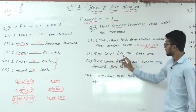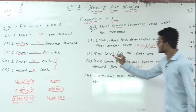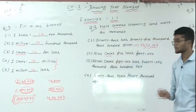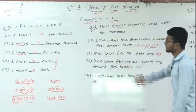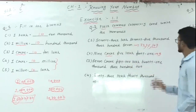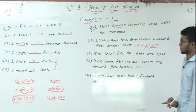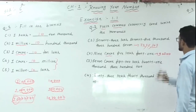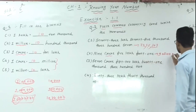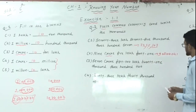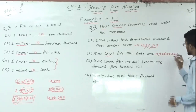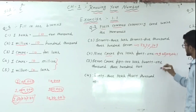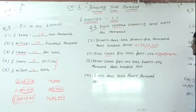Same for the next: 9 crore 5 lakh 41. This uses crore, so it is also the Indian system. Write down 9, then 05 for 5 lakh, then 00 for the missing thousands, then 41. So: 9,05,00,041 — applying the Indian system comma rule: 3 digits, then 2 digits, then 2 digits.